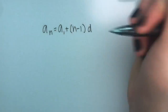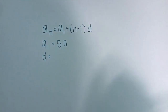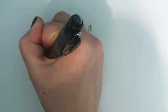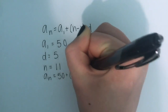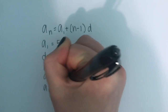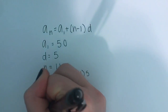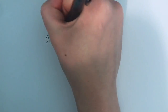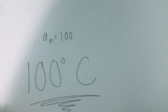We know that Jonathan initially turned the stove to 50 degrees Celsius, which makes his a sub 1 equal to 50. Jonathan also turned the stove up 5 degrees Celsius each time, which makes his common difference d equal to 5. It took him a total of 11 minutes to reach boiling point, making n equal to 11. Therefore, we substitute these numbers into the equation and solve, getting a sub n equals 100 degrees Celsius, which is what Jonathan got.